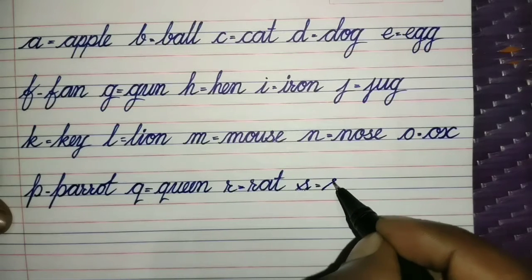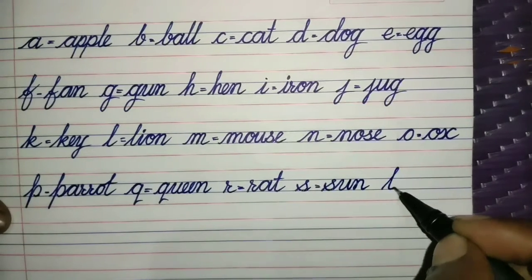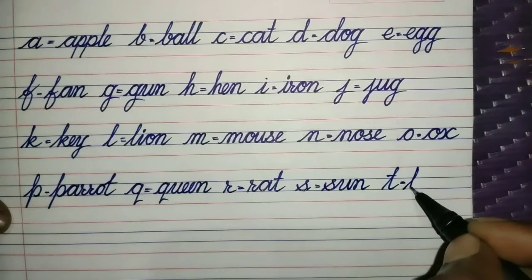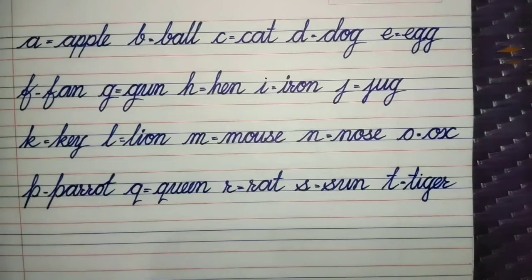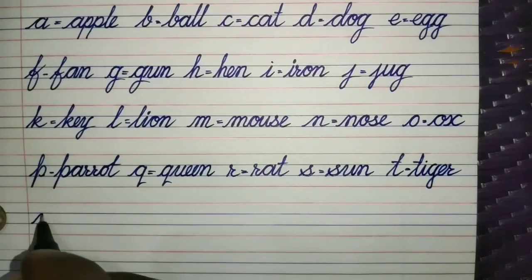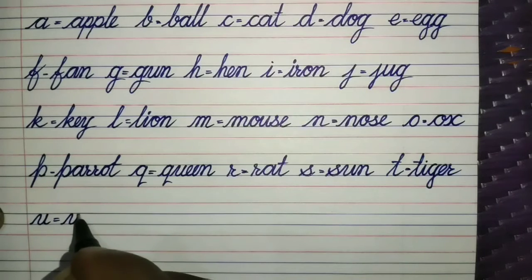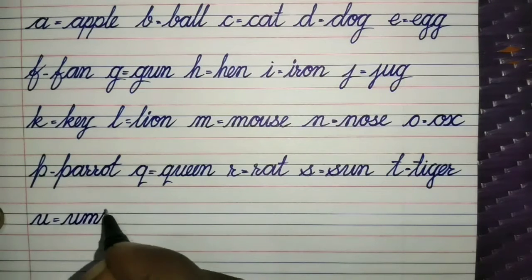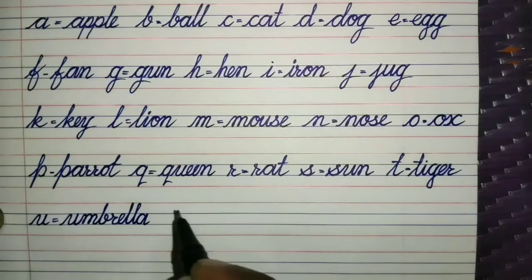S for Sun. S, U, N. Sun. T for Tiger. T, I, G, E, R. Tiger. U for Umbrella. U, M, B, R, E, L, L, A. Umbrella.